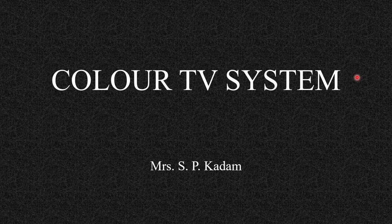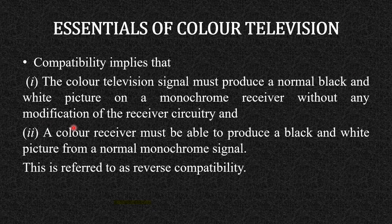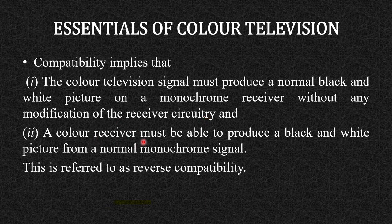Let us start today's session with the color television system. To understand the color television system, we must understand what compatibility means. The color television signal must produce a normal black and white picture on a monochrome receiver without any modification of the receiver circuitry, and a color receiver must be able to produce a black and white picture from a normal monochrome signal. This is also referred to as reverse compatibility.